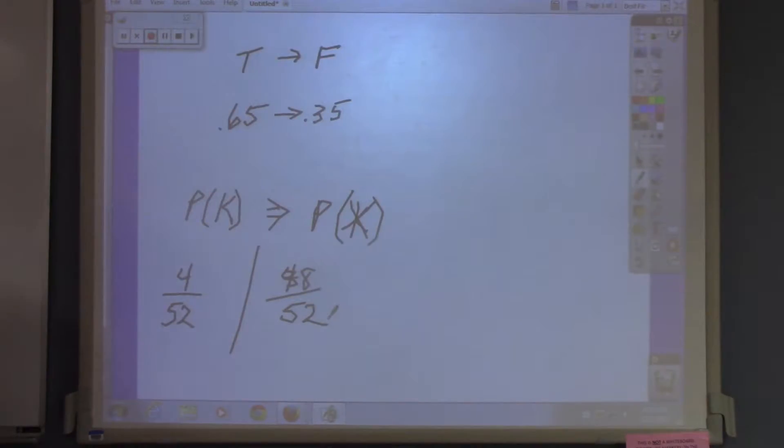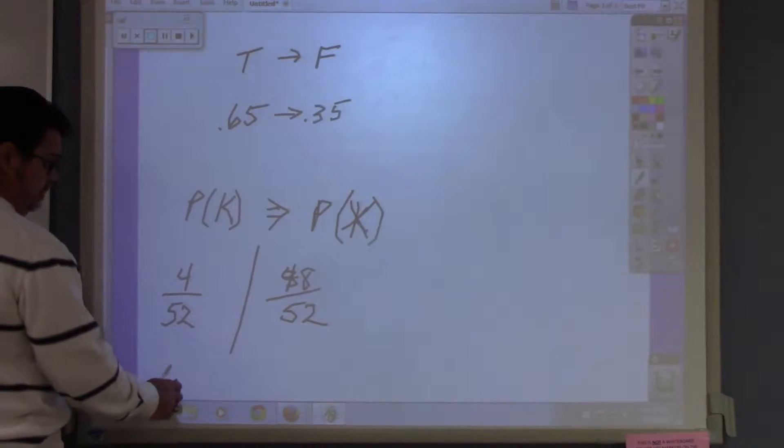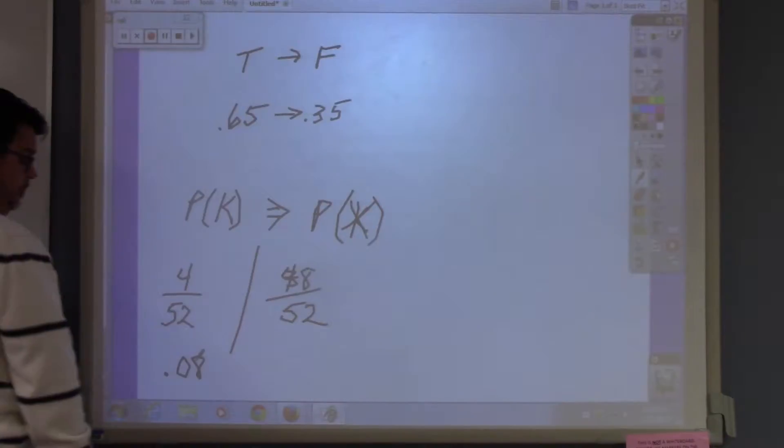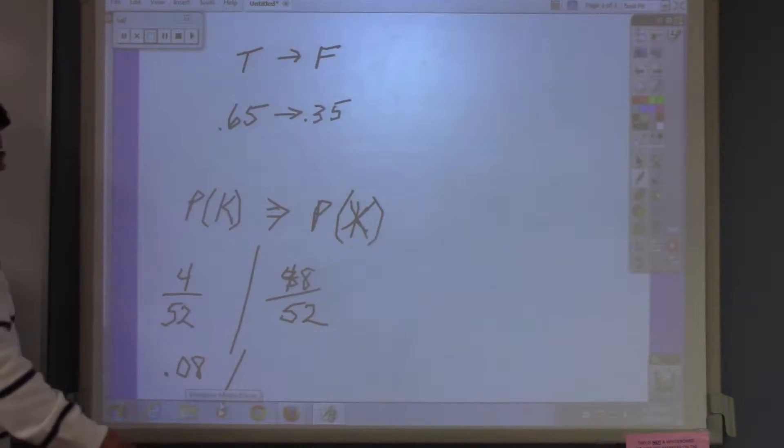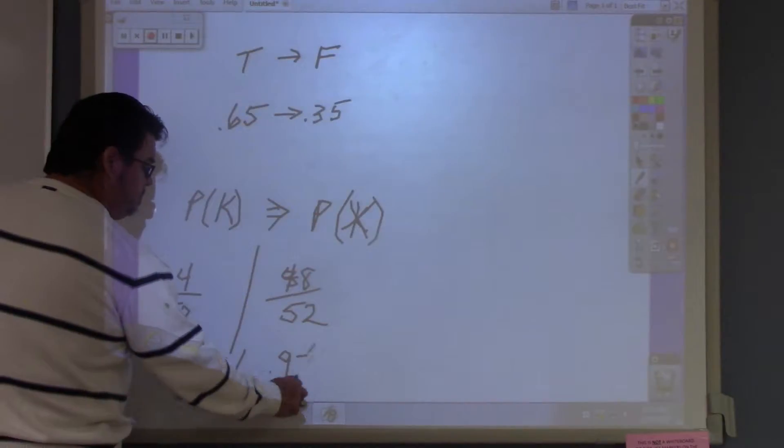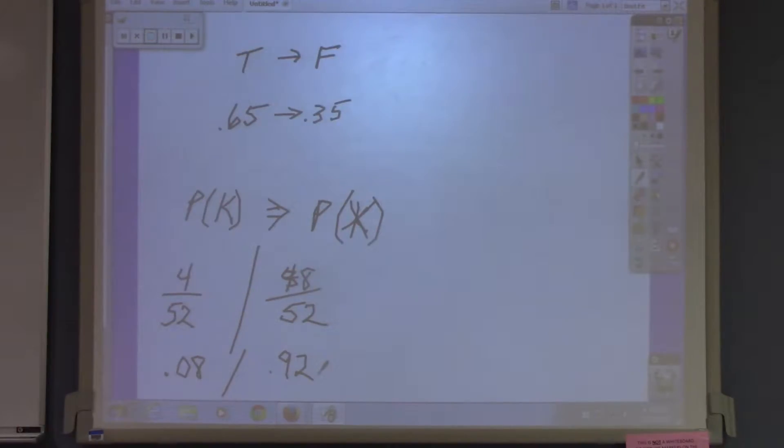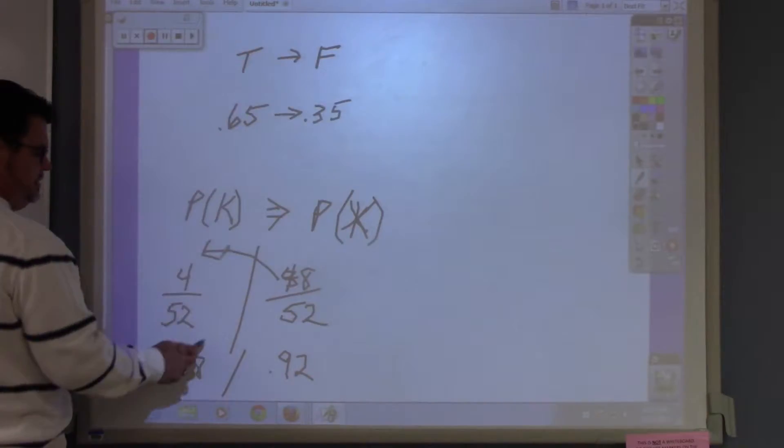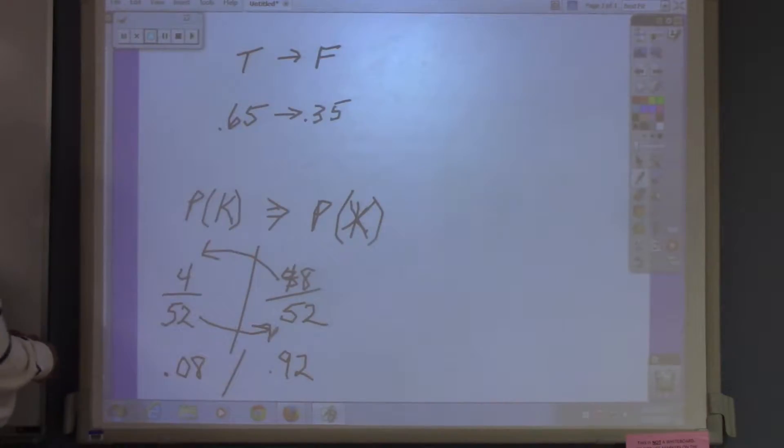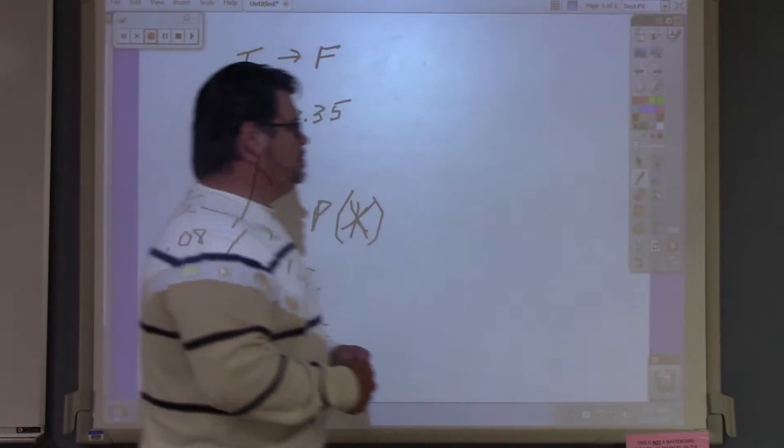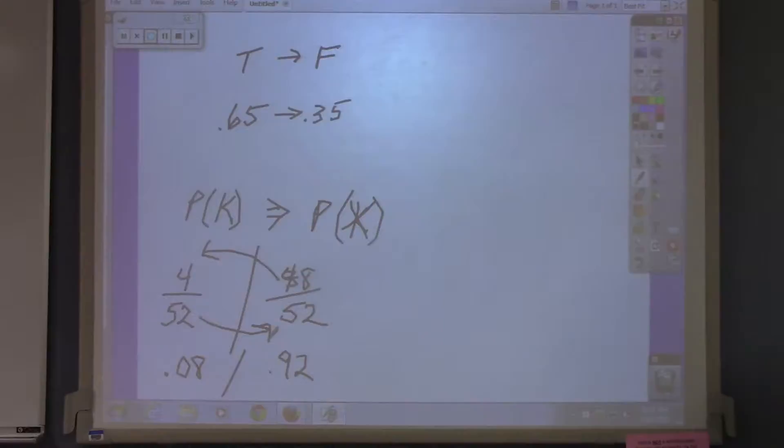Now, if you change this to a decimal, it's one over thirteen, which is point zero seven or point zero eight. Then what is the complement of point zero eight? Point nine two. That's when it turns into a dollar. When you turn that fraction into a decimal, that's when it goes to the scale of zero to one. So this is the complement of this, and this is the complement of this. And that's how you use the complement.